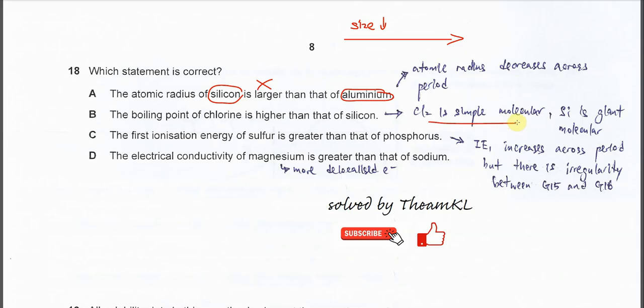So the boiling point of chlorine is very low. For silicon, because it's similar to carbon in group 14, it has a giant molecular structure. Silicon actually has the highest boiling point in this period. Therefore, this statement is also wrong.